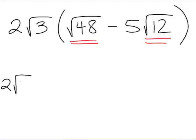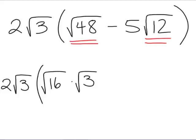We have 2 root 3. Let's see, what is a perfect square that goes into 48? Well, 16 goes into 48, and 16 is a perfect square because the square root of 16 is 4, so I will rewrite the square root of 48 as the square root of 16 times the square root of 3. Now, the square root of 12, we can take a 4 out of that, and the square root of 4 is 2, so I'll rewrite this as the square root of 4 times the square root of 3.